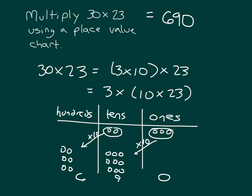In this step, we did 3 times as many — so 3 times as many as those 2 hundreds gave us 6 hundreds.